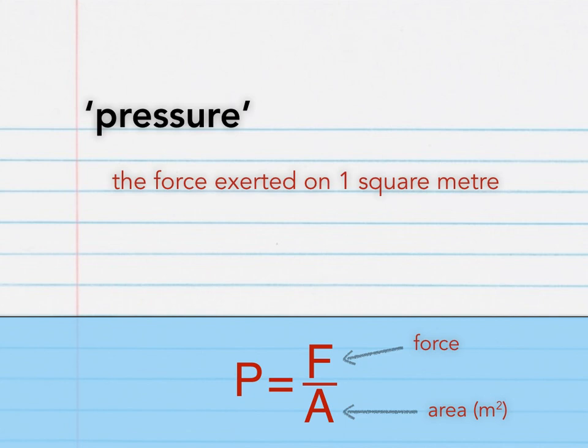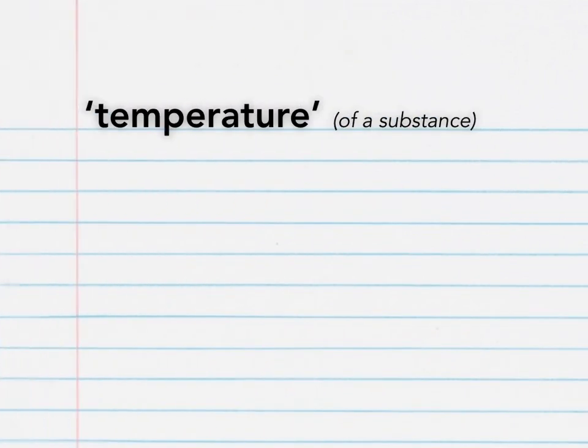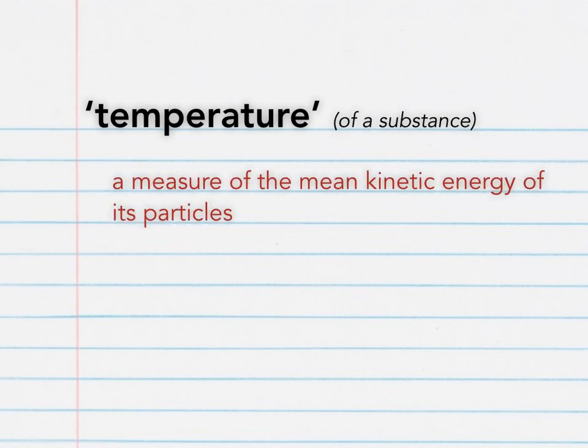Next is the one definition in this video where an equation isn't used to remember it. Temperature. Here you just need to know that the temperature of a substance is a measure of the mean or average kinetic energy of its particles.